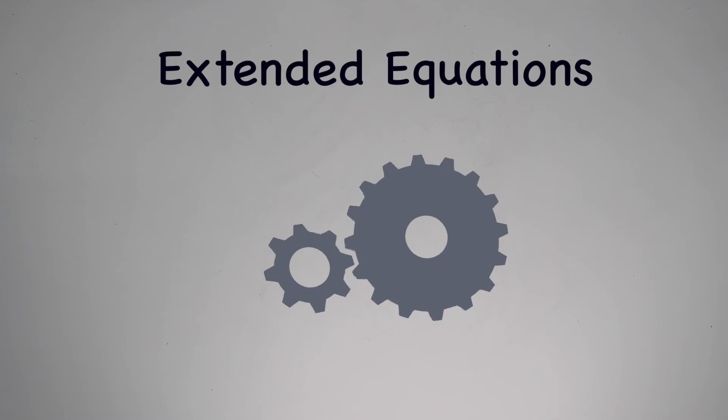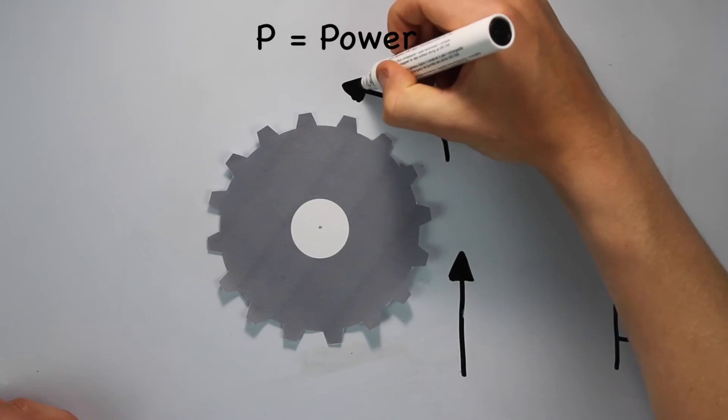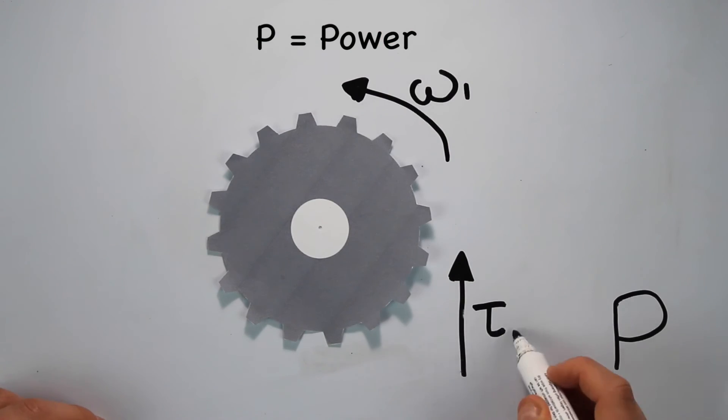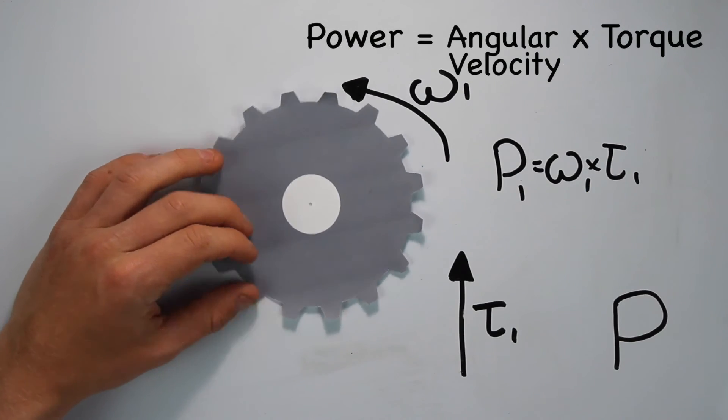Now let's look at some more gear equations. Power, in general, is a measure of the amount of energy over a time period. In our example when we are talking about gears, power is the angular velocity of the gear multiplied by the torque of the gear.